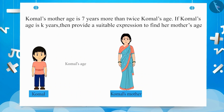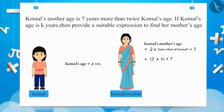As we know, Komal's age is k years and Komal's mother's age equals 7 more than twice Komal's age, which is 2 multiplied by k plus 7, equal to 2k plus 7. Therefore, the expression to find her mother's age will be 2k plus 7.